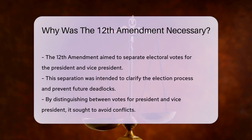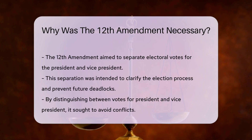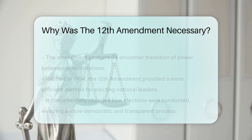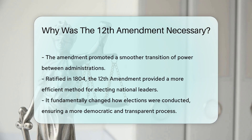The amendment aimed to separate the electoral votes for president and vice president, ensuring clarity in the election process and preventing similar deadlock situations. It also aimed to avoid conflicts and promote a smoother transition of power. The 12th Amendment was ratified in 1804, providing a more structured and efficient method for electing the president and vice president.